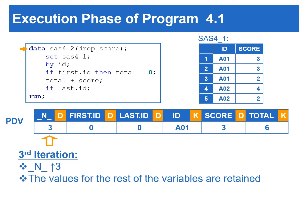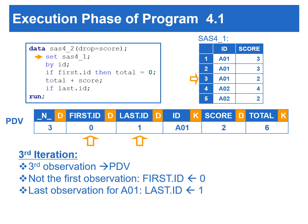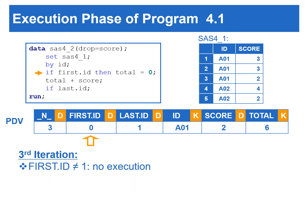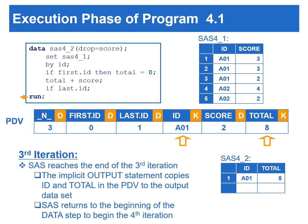At the beginning of the third iteration, _N_ is incremented to 3 and the rest of the variables are retained. The set statement copies the third observation from the input data to the PDV. First.id is set to 0 since this is not the first observation for A01. But last.id is set to 1 since this is the last observation for A01. Since first.id does not equal 1, there is no execution of the IF-THEN statement. Total is calculated. Since last.id equals 1, which is true, SAS continues to execute the remaining statements in the data step. Remember, this is the rule for the subsetting IF statement. SAS reaches the end of the third iteration, the implicit output copies the contents from the PDV to the output data, and then SAS returns to the beginning of the fourth iteration.